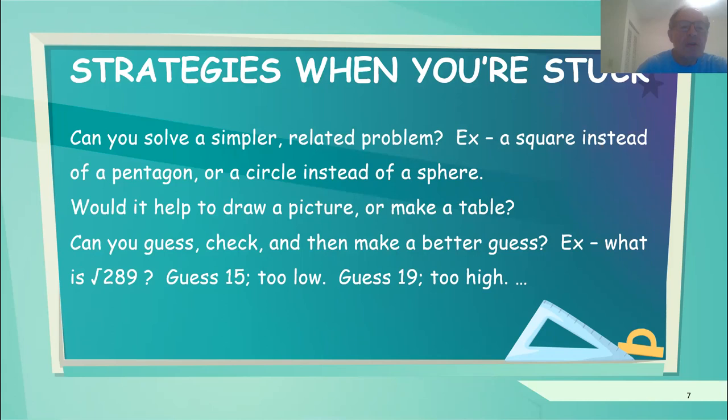Here are some strategies when you're stuck on a problem. Can you solve a simpler related problem? For example, suppose your problem is about a pentagon. Is there a similar problem related to a square that's easier to solve and that helps you answer the more complicated problem? Similarly, you may have a problem about a sphere. Can you do a similar problem about a circle that helps you answer the problem you really need? Would it be helpful to draw a picture or make a table? Can you guess at your answer, check, and then make a better guess? For example, what's the square root of 289? Try 15. That's too low. Try 19. That's too high. Make one or two more guesses and you'll likely get the right answer.